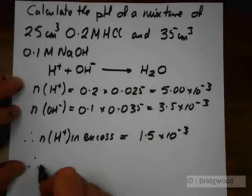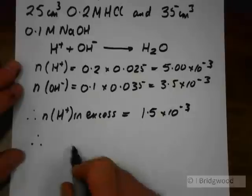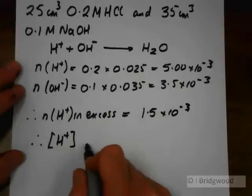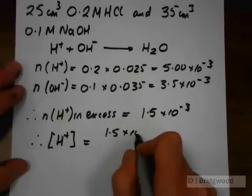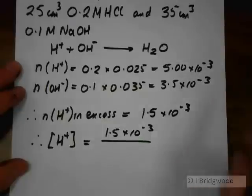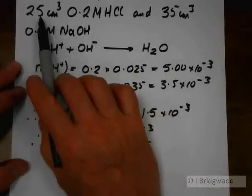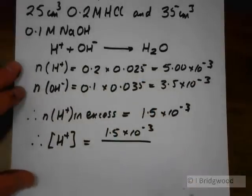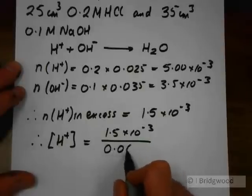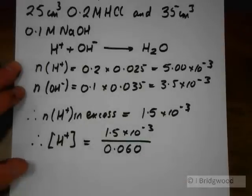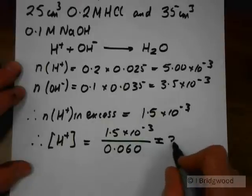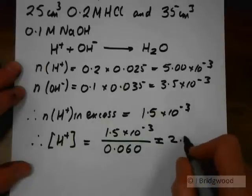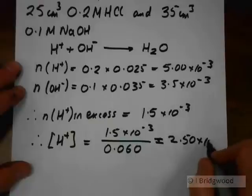Similarly therefore, the concentration of hydrogen ions is going to be equal to 1.5 times 10 to the minus 3 divided by the total volume of 0.060, giving me a value of 2.5 times 10 to the minus 2 moles per cubic decimetre.